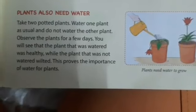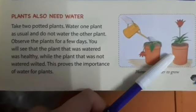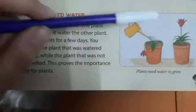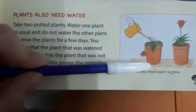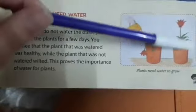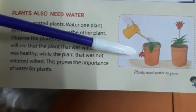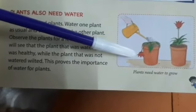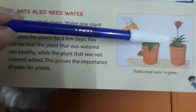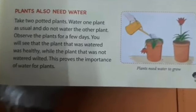Now we will conduct an activity. Aap yeh activity ghar pe bhi kar sakte hai. If you take two plants in different pots, aur ek plant ko aap roz paani deenge, and the next plant ko, if you give water not timely, agar aap usse roz water nahi karenge, so kuch dino ke baad, you will see that the plant to whom you gave water will be flourished, will grow and will be healthy. But the dousra plant, jisko aap ne water nahi kia, woh plant murcha jayega, thoda kharab ho jayega. But soon after, jab aap usse paani dene lagenge, it will grow just the same as the other plant. So, this proves that water is very important to keep the plant healthy.